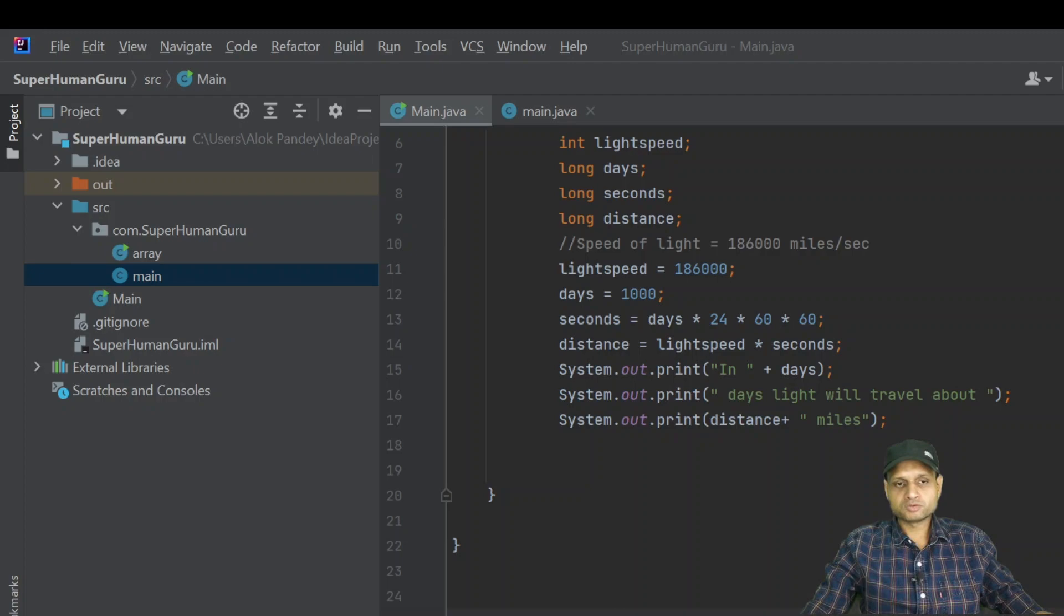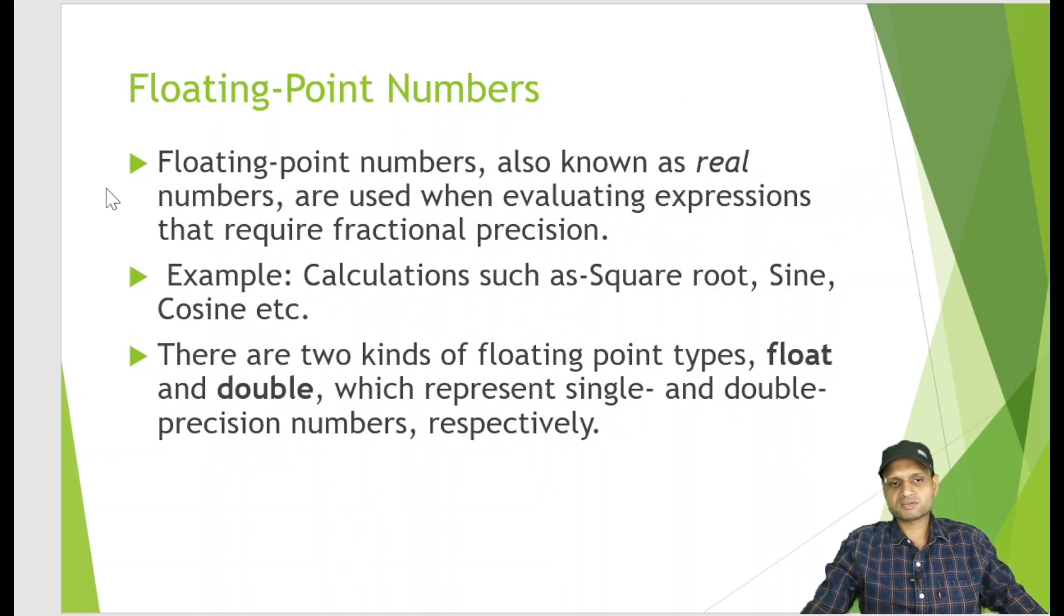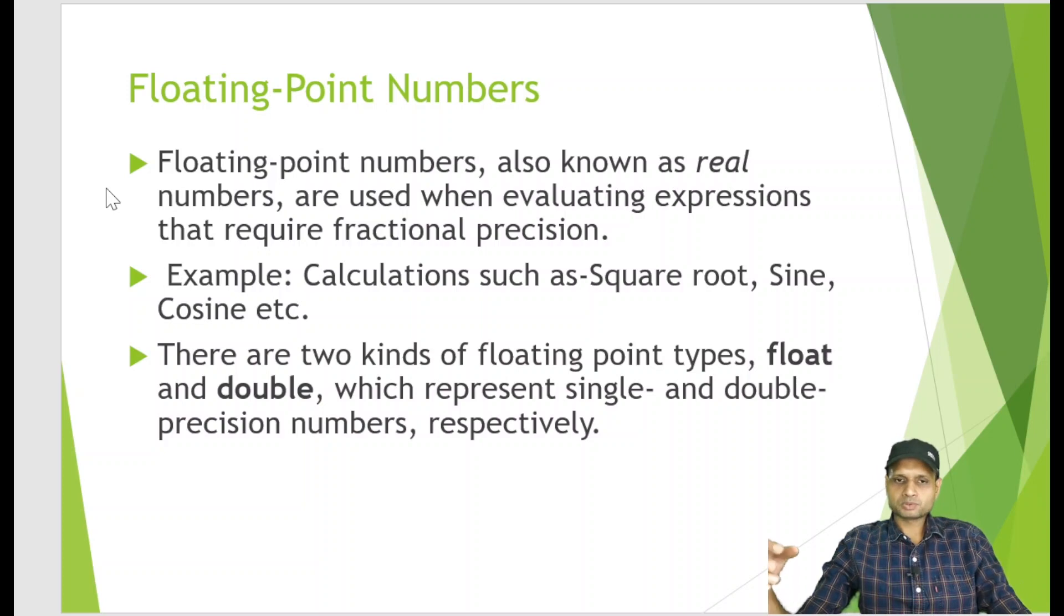Now we move to floating point numbers. What are floating point numbers? Suppose you have to calculate the area of a square, circle, or triangle. Most of the time these values, the circle's area, triangle's area are in points. Floating point numbers are known as real numbers and are used when evaluating expressions that require fractional precision. For any value you calculate, like square root or trigonometry values, we define them through float and double.